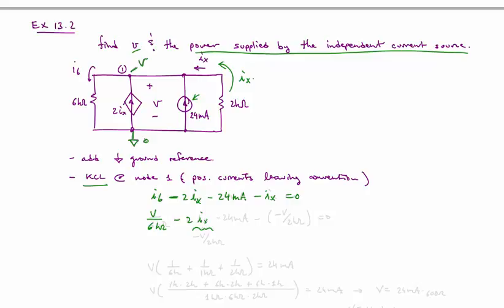And it is equal to, actually the current going this way is just equal to V over 2 kilo ohms. But because IX is pointing the opposite direction, we have to say that IX is minus V over 2 kilo ohms. Then we have our minus 24 milliamps, and here again we put in IX minus V over 2 kilo ohms. All of that is equal to zero.